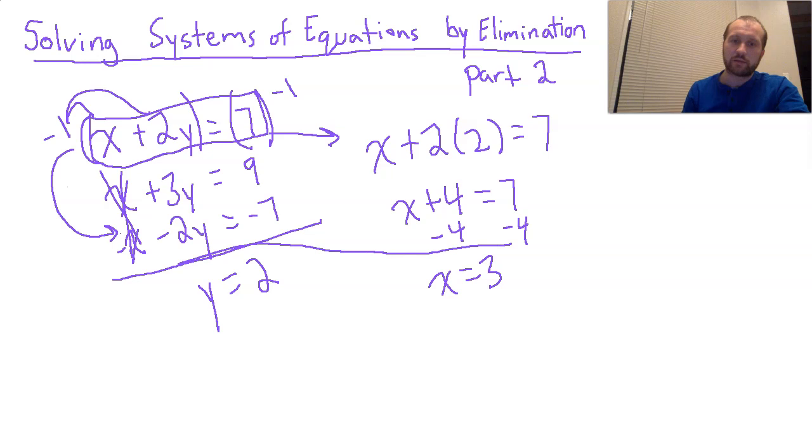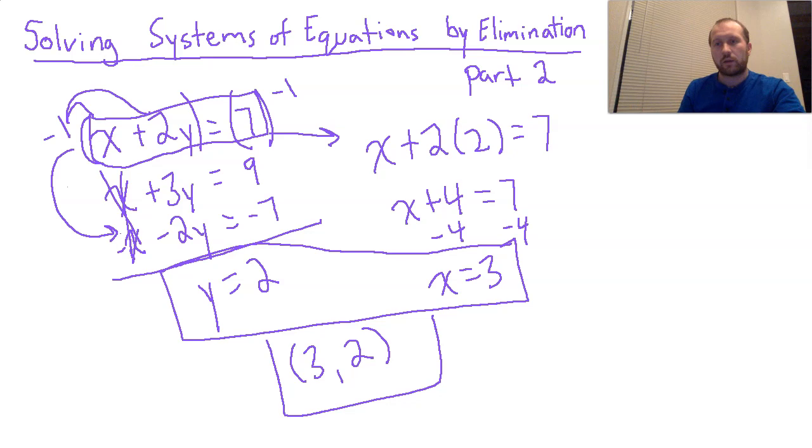So this is my answer. I could write it as an ordered pair: 3 comma 2. Always write the x first. The first step to elimination is thinking, what do I need to multiply one of these equations by to get the variables to line up so that one can eliminate? Remember, you can multiply by anything you want. You typically look for the simplest thing first.